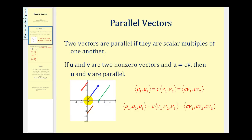So if we have two parallel vectors that are also position vectors, meaning their initial point is at the origin, then they would be on top of each other as we see here, unless they point in opposite directions.